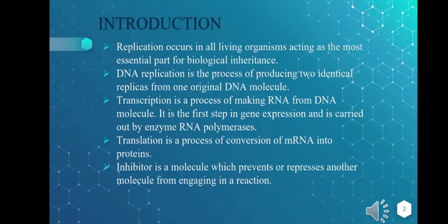Before we look into the topic of inhibitors of replication, transcription, and translation, we'll be discussing some important terminologies. Replication occurs in all living organisms, acting as the most essential part of biological inheritance. DNA replication is the process of producing two identical replicas from the original DNA molecule, and it is passed to subsequent generations.